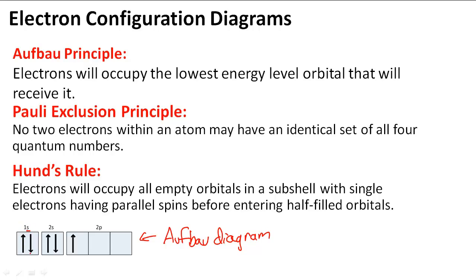So 1s orbital can only fit two electrons, and there's one, two electrons there. And then we move on to 2s then 2p.